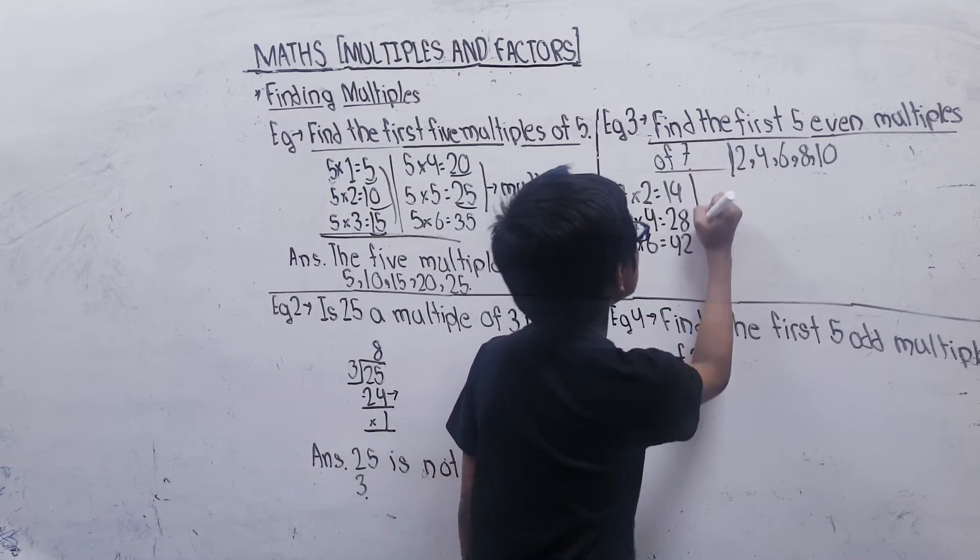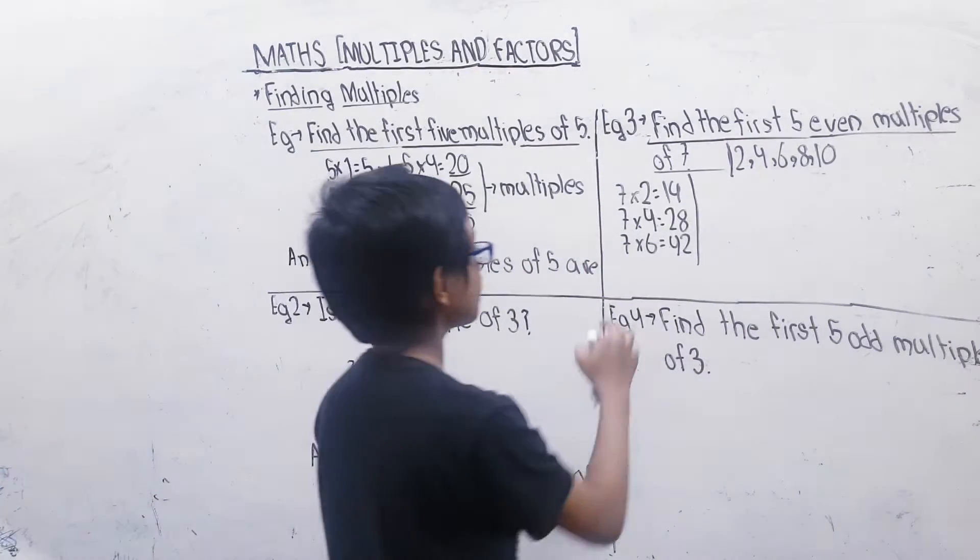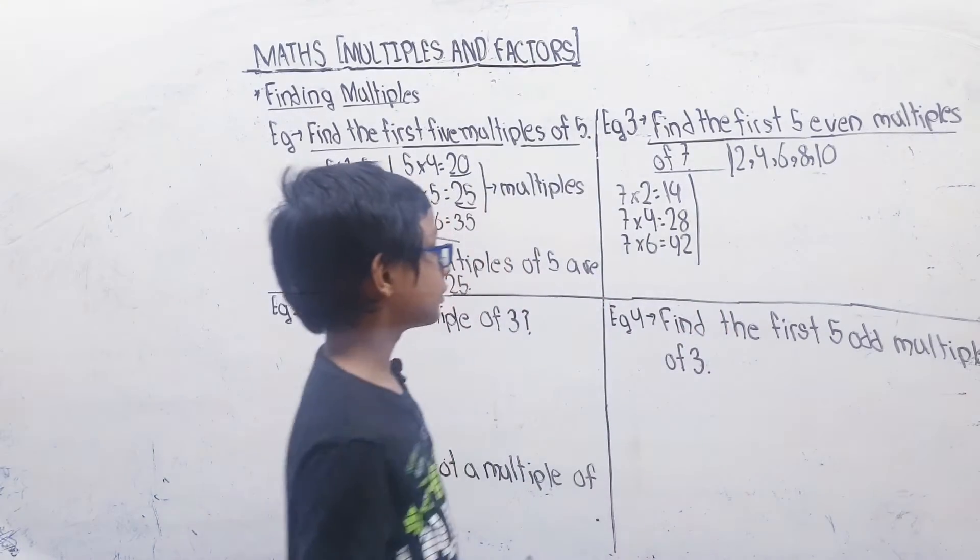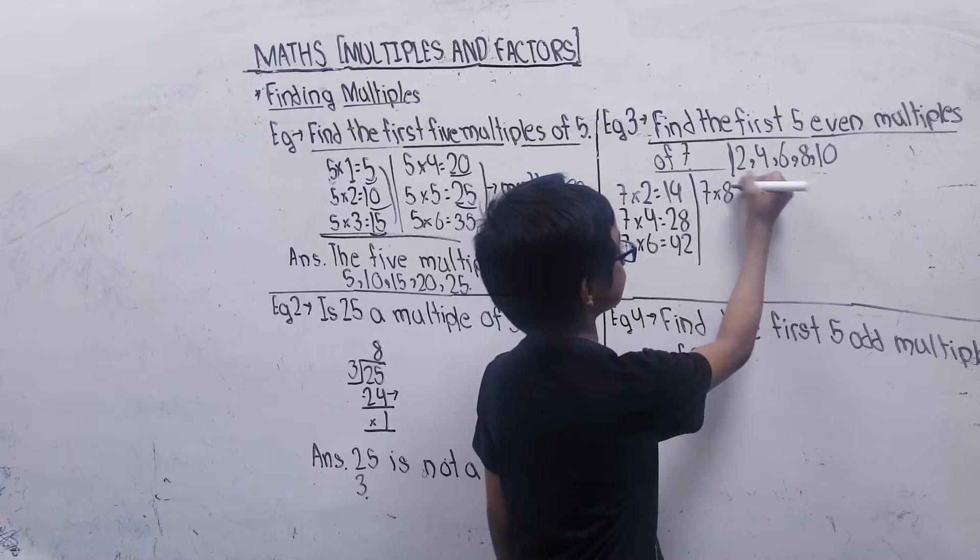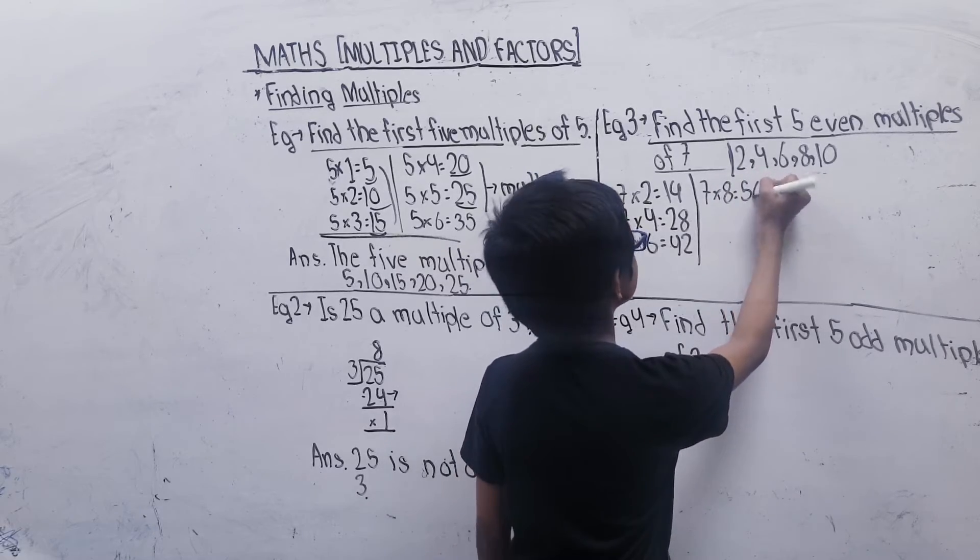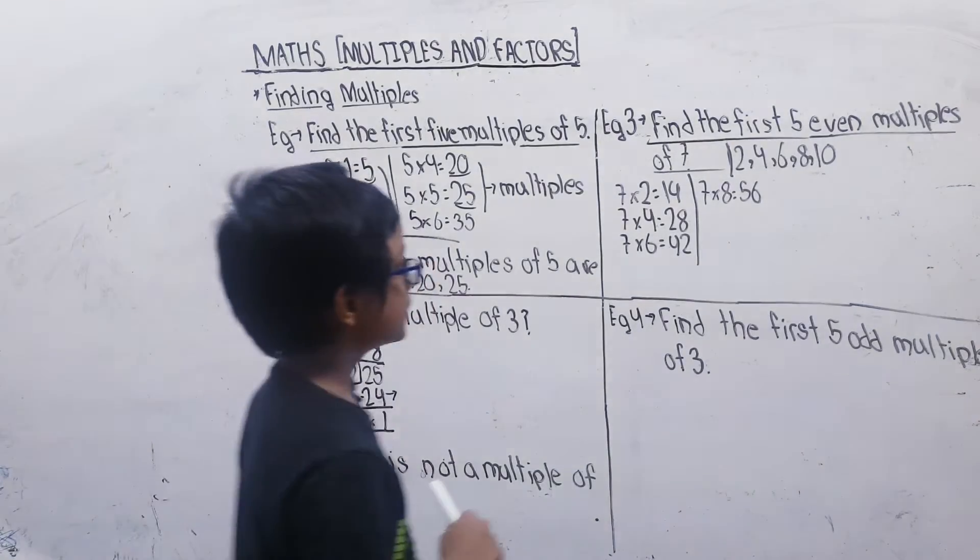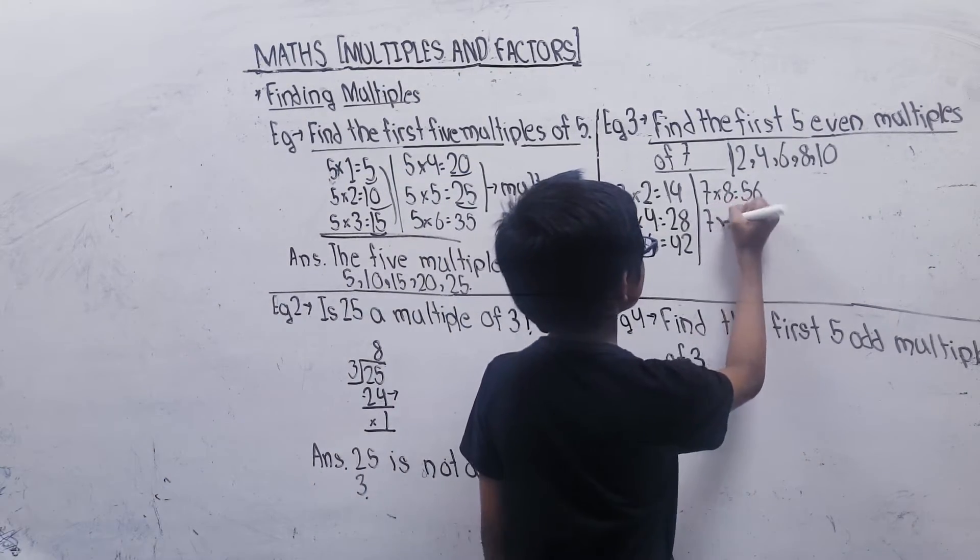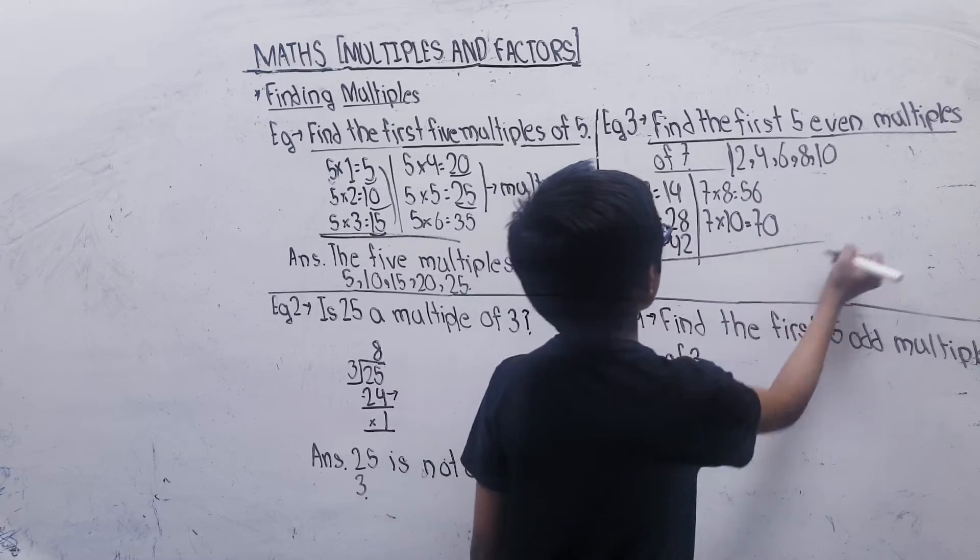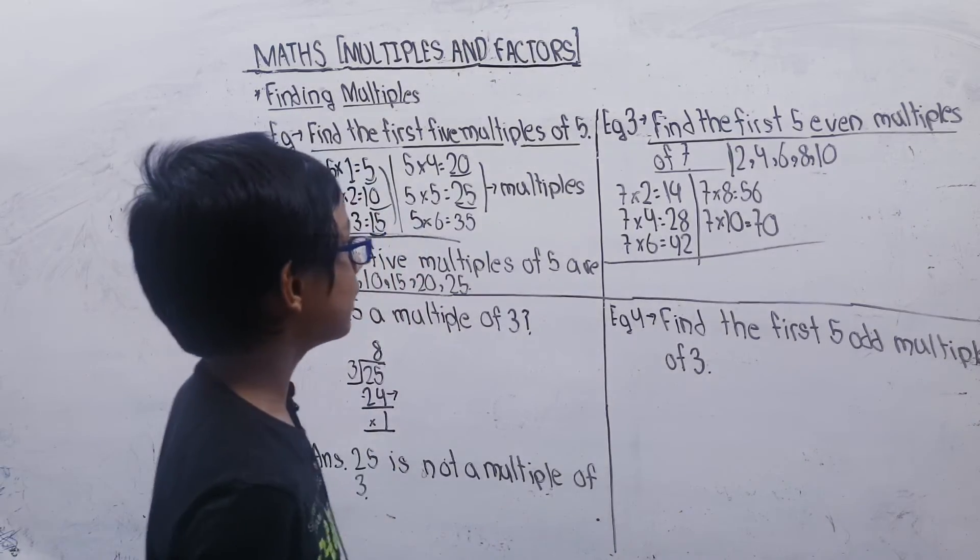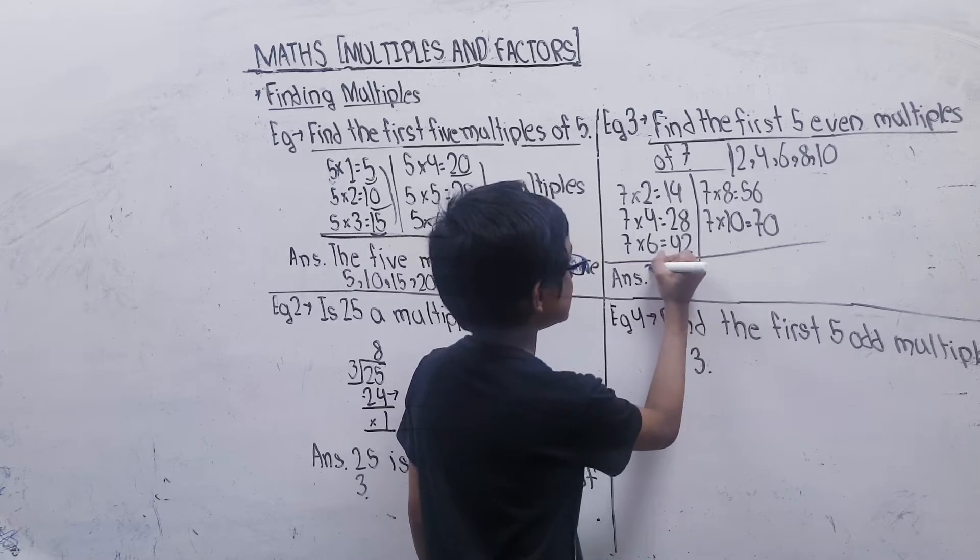Then we have to find two more even multiples of 7. So we have done it till 7×6 is 42. 7×7 is 49, 7×8 is 56, then 7×10 is 70. So these are the five even multiples of 7.